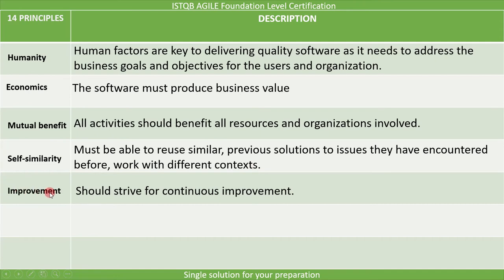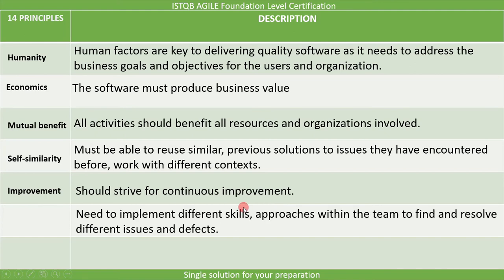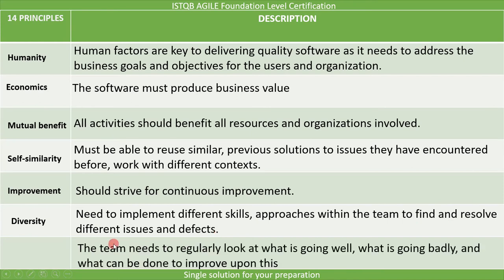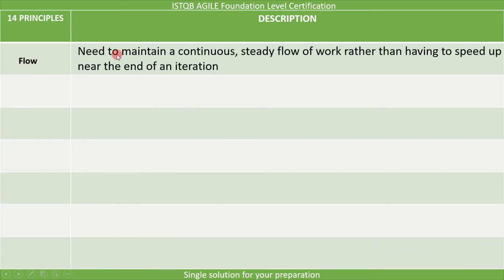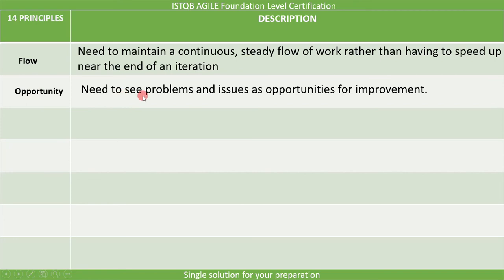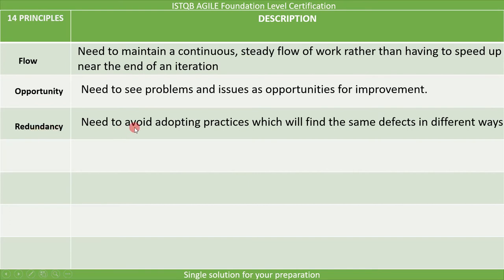The fifth principle is improvement: we should strive for continuous improvement. Sixth is diversity: we need to implement different skills and approaches within the team to find and resolve different issues and defects. The seventh is reflection: the team needs to regularly look at what is going well, what is going badly, and what can be done to improve. The eighth is flow: we need to maintain a continuous, steady flow of work rather than speeding up near the end of an iteration. The ninth is opportunity: we need to see problems and issues as opportunities for improvement. The tenth is redundancy: we need to avoid adopting practices which find the same defects in different ways.